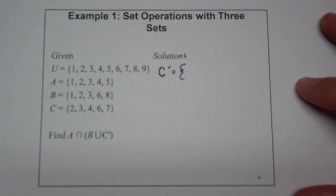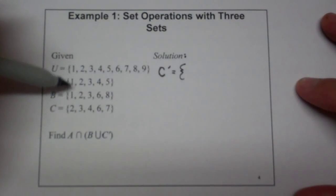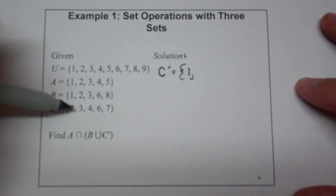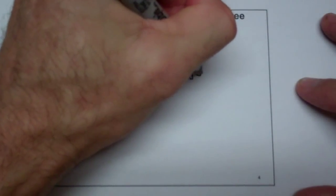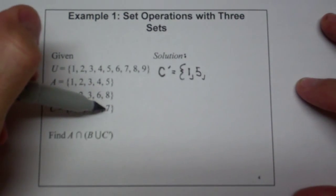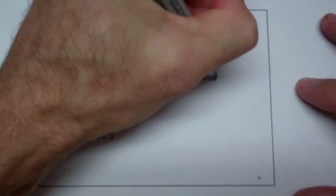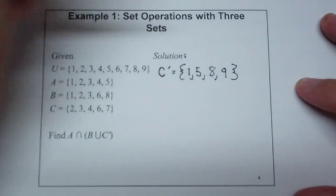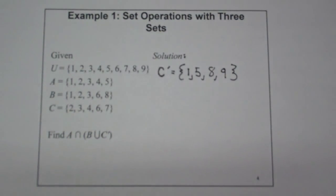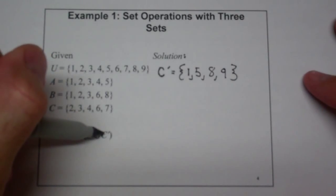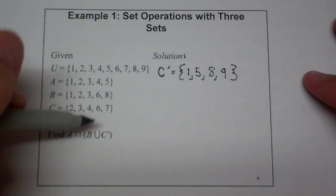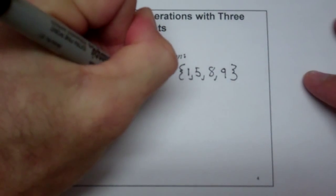So what's everything that's not in C? We can see that 1 is not in C, 2 and 3 and 4 are, 5 is not in C, 6 and 7 are, but 8 and 9 are not. So that is my C complement. Now the next thing I need to do is find the union — we're going to solve for B union C complement.